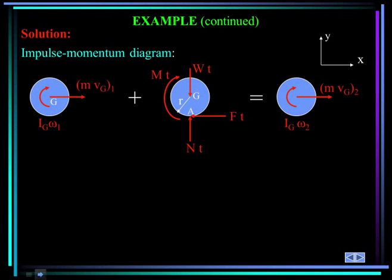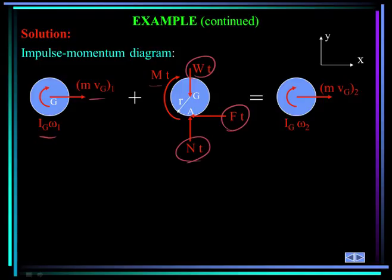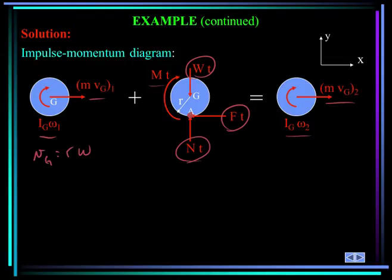Here's the impulse-momentum diagram. You see the angular momentum and linear momentum in state one. Adding all forces acting on the body integrated over time, plus the moment integrated over time, equals the final momentum — the angular momentum about the mass center times omega_2 and the linear momentum (mass times velocity of the mass center at state two). Since this wheel rolls without slip, the velocity of the mass center equals r times omega. Point A, the contact point with the ground, is the instantaneous center of zero velocity, so it's convenient to apply the impulse-momentum equations about that point.